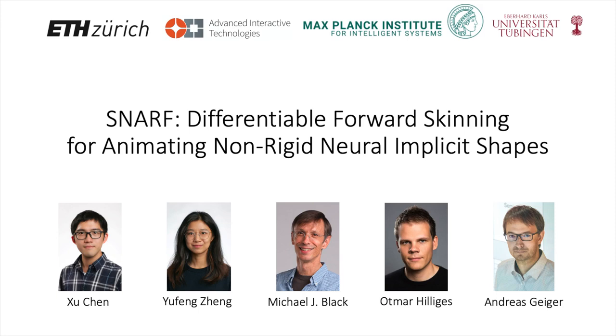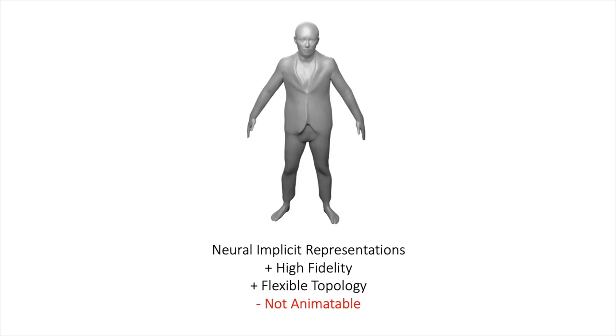We present SNARF, Differentiable Forward Skinning for Animating Non-Rigid Neural Implicit Shapes. Neural implicit representations have emerged as a powerful tool to capture geometry at high fidelity with flexible topology.